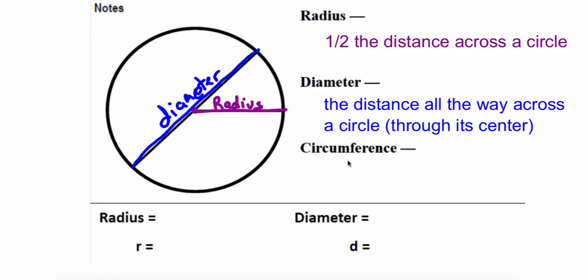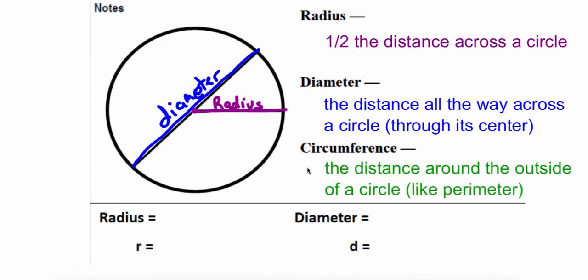And then our last one is the circumference. Think of this kind of like the perimeter. It's the distance around the outside of the circle. You can write circumference over here and again over here. By writing it around the shape it helps us see that it's the distance around the outside.